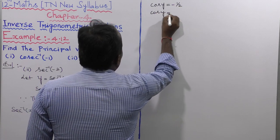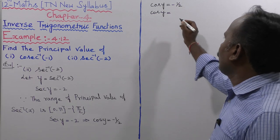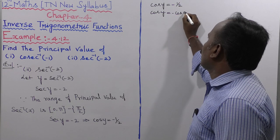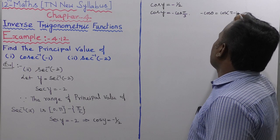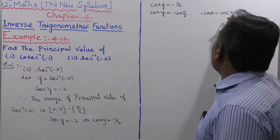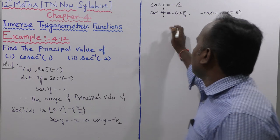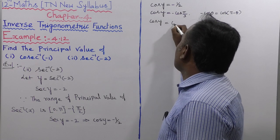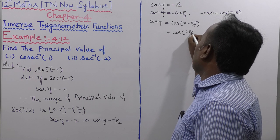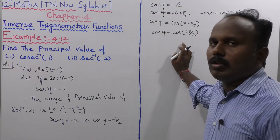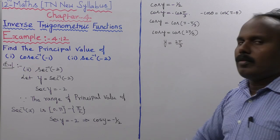We know cos y equal to minus 1 by 2. Since cos(pi/3) equals 1 by 2, and using the formula minus cos theta equals cos(pi minus theta), we get minus cos(pi/3) equals cos(pi minus pi/3), which equals cos(2pi/3). Therefore cos y equals cos(2pi/3), so y equals 2pi/3.